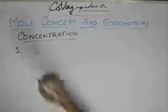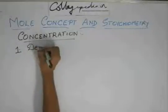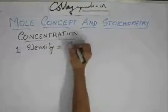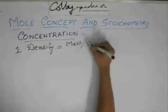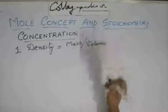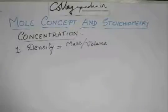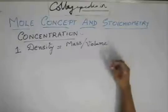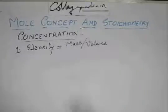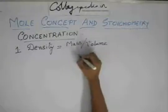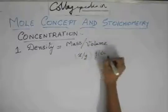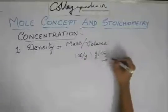The first type of concentration is nothing but our density. As we all know density is mass by volume. If there is a substance whose mass is suppose x gram and its volume is suppose y cc, then its density would be x by y gram per cc. And this gram per cc or gram per milliliter is a unit of density.